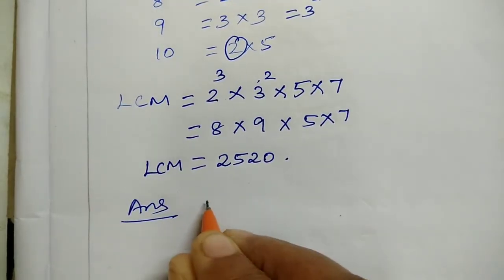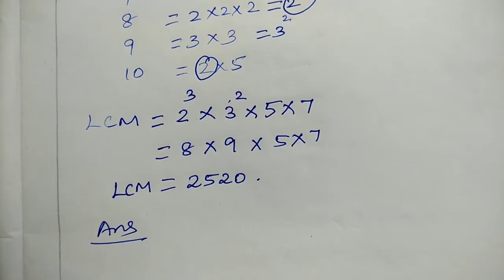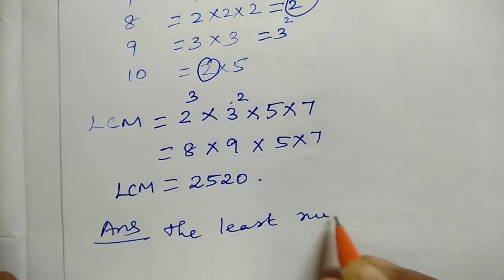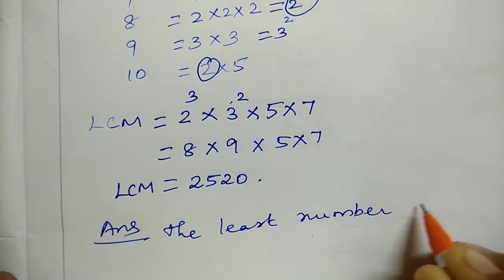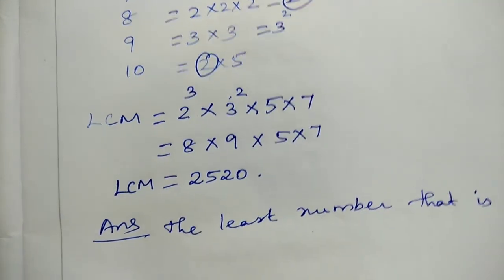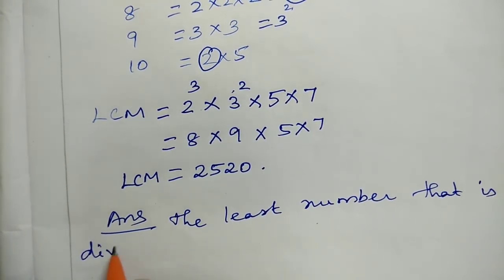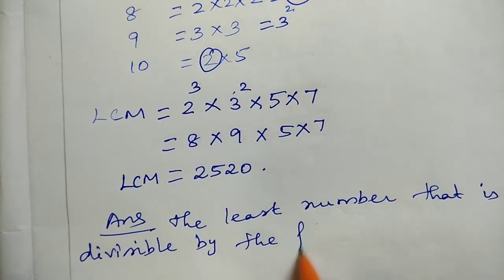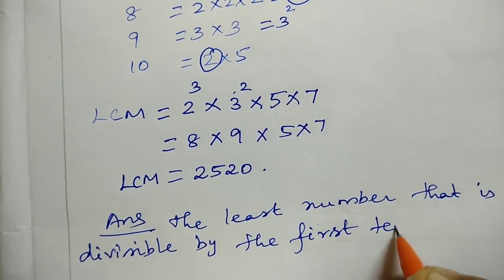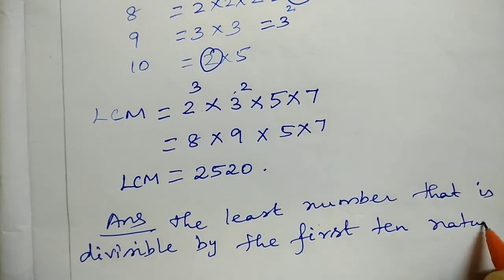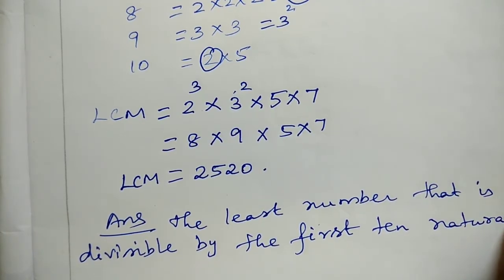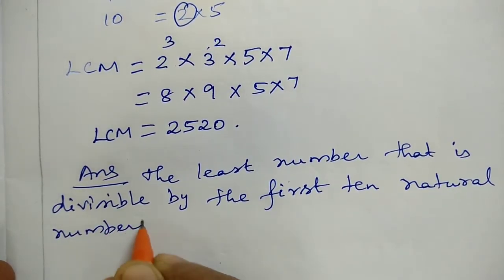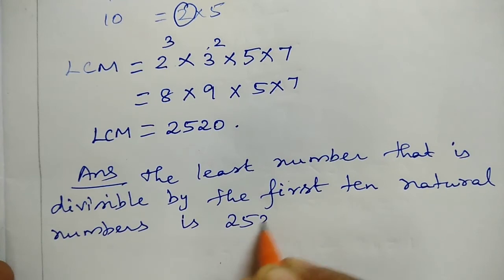The answer is: the least number that is divisible by the first 10 natural numbers is 2,520.